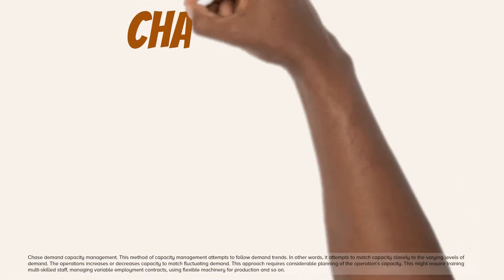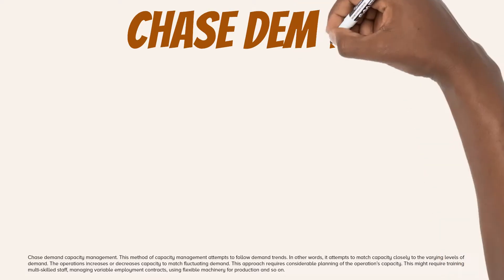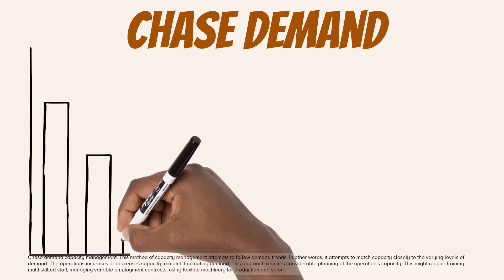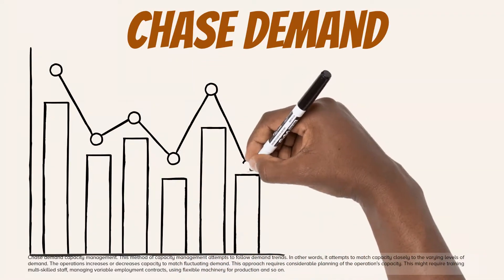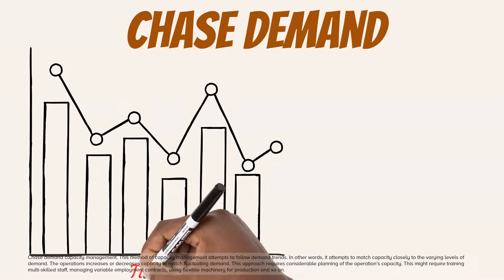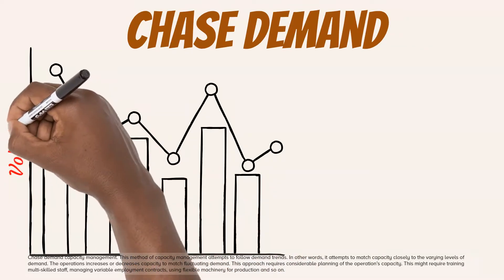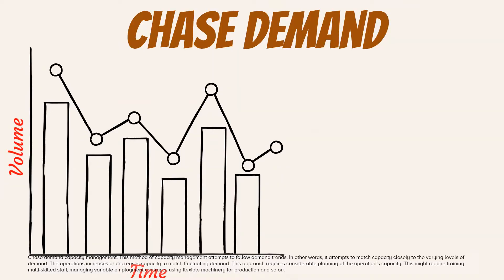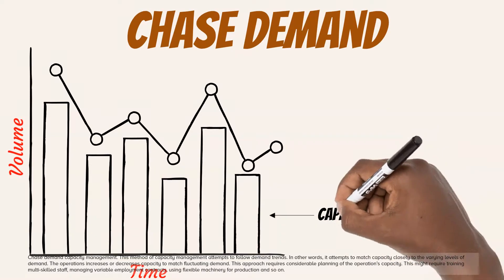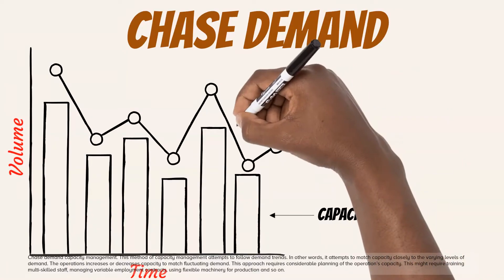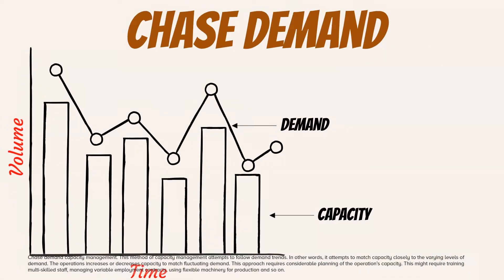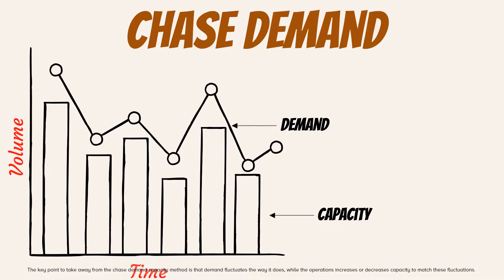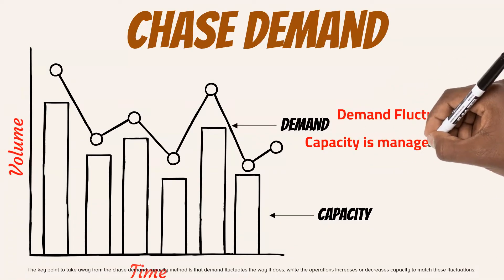Chase demand capacity management attempts to follow demand trends — in other words, it attempts to match capacity closely to the varying levels of demand. The operations increases or decreases capacity to match fluctuating demand. This approach requires considerable planning and might require training multi-skilled staff, managing variable employment contracts, using flexible machinery for production, and so on. The key point is that demand fluctuates the way it does, while the operations increases or decreases capacity to match these fluctuations.